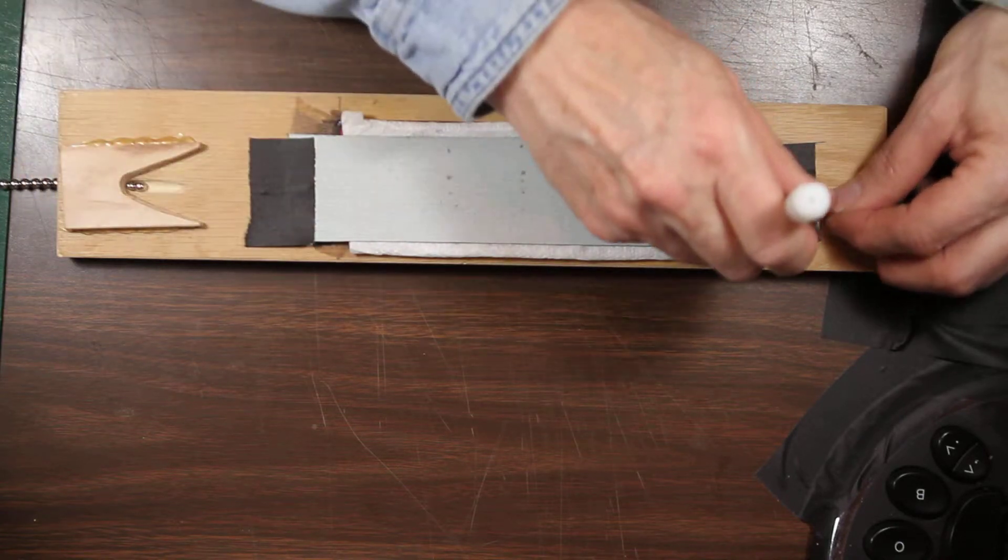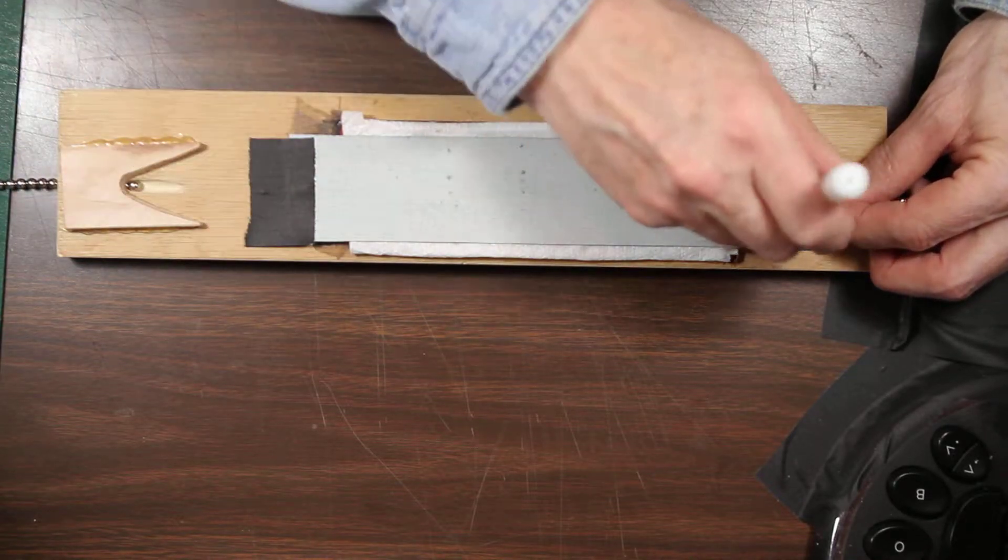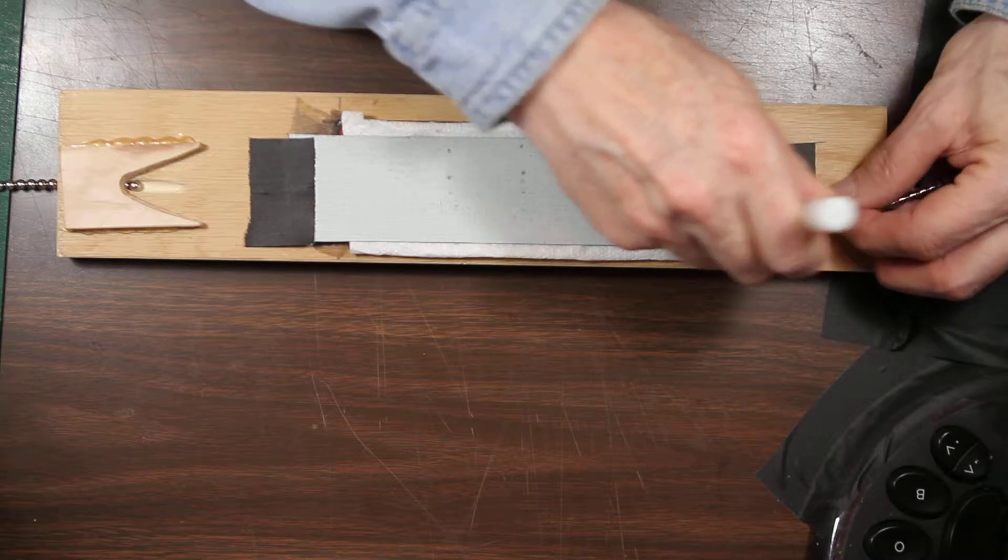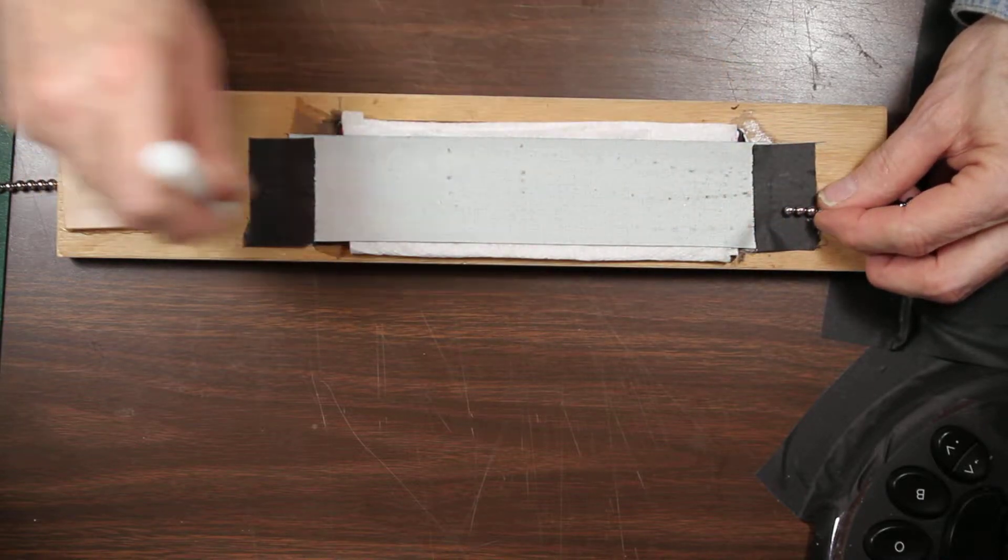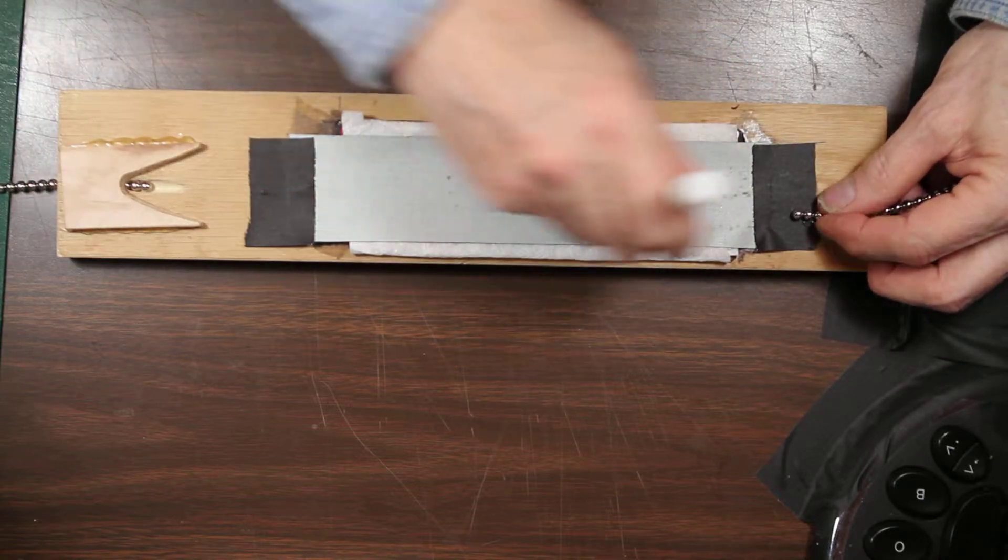So the magnets are providing their own cleaning pressure against the plate, and I don't have to push them against it and possibly cause them to not turn. All I'm doing is just dragging them across the plate lightly, and they provide their own pressure due to the magnetic fields.